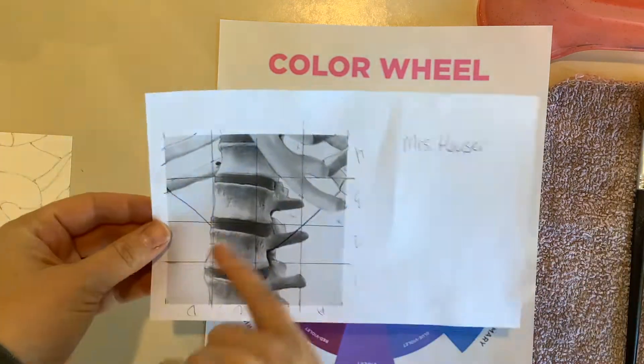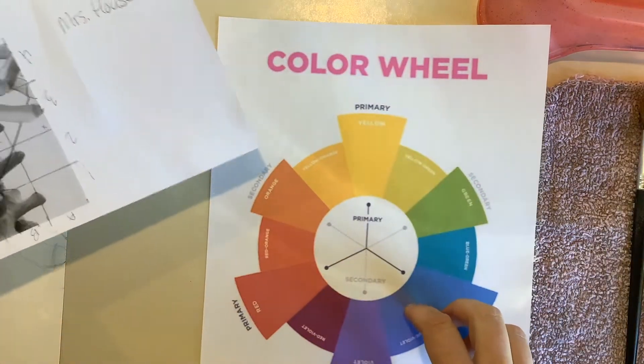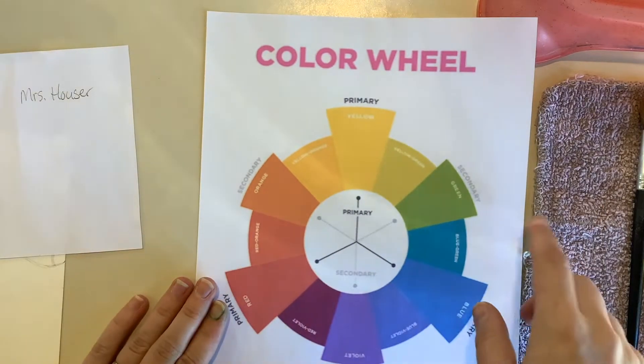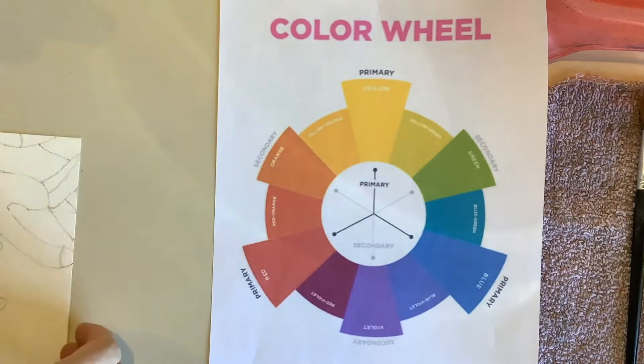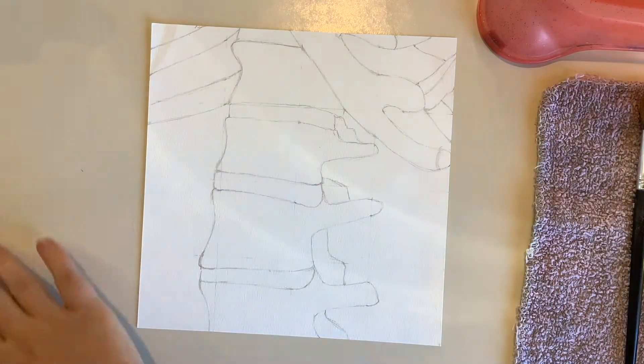To get started you'll want to look at your reference image and decide what colors you want to use for your core shadow, your middle tones, and your highlight, as well as which color sets you want to use for your background. I think I'm going to use the yellows to greens and violets to red.